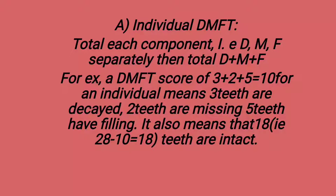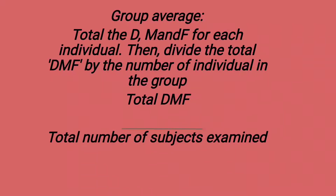A DMFT score of 10 also means that 28 minus 10 equals 18 teeth are intact (when third molars are not included). For group average, total the D, M, and F for each individual, then divide the total DMF by the number of individuals in the group — that is, total DMF divided by the total number of subjects examined.